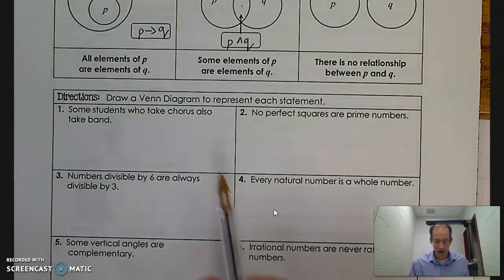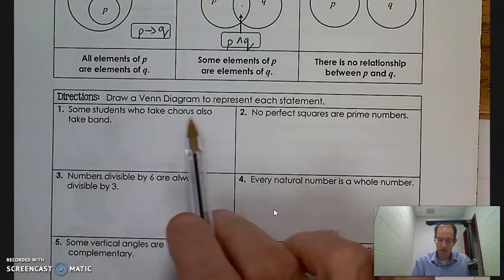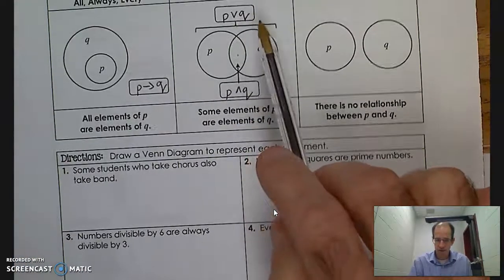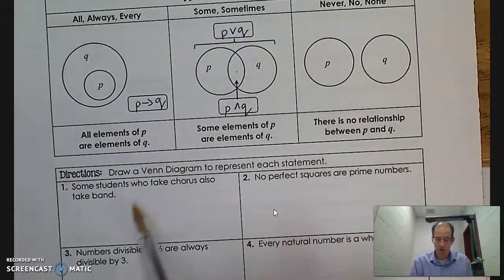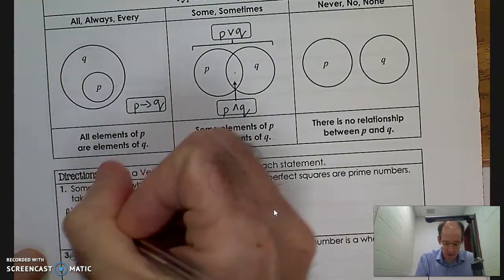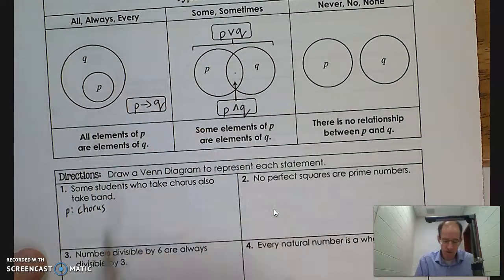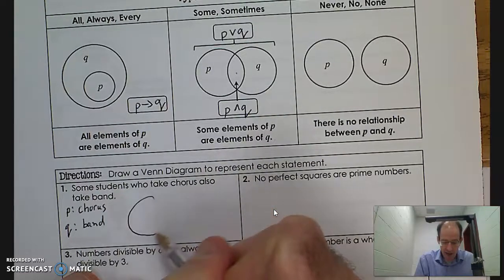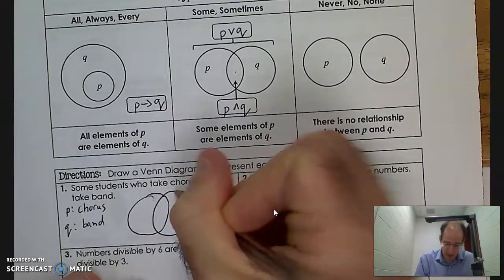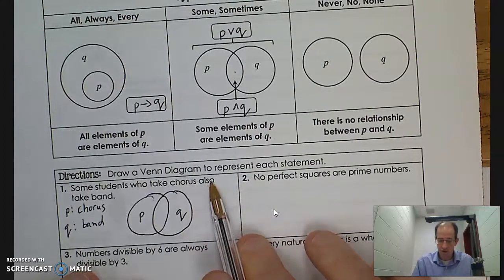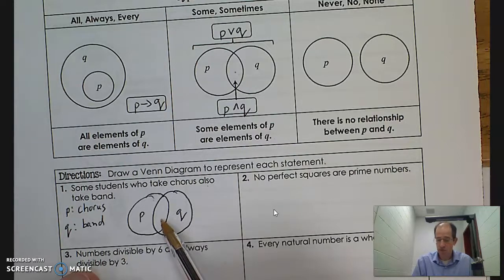Let's go to the first question: draw a Venn diagram to represent each statement. 'Some students who take chorus also take band.' I see the keyword some, which tells me to draw two overlapping circles. P will be students who take chorus, and Q will be students who take band. Drawing two overlapping circles shows the situation where some students who take chorus also take band — those students are represented in the middle overlap region.